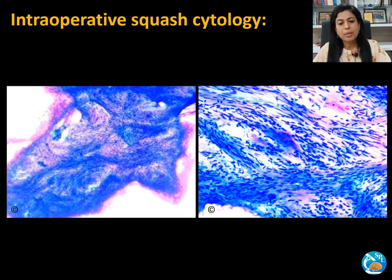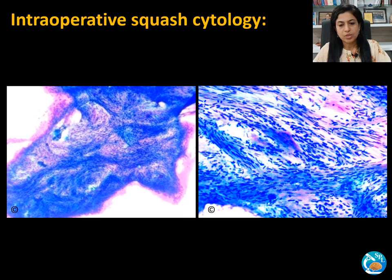We should remember that schwannomas are difficult to crush. So when it is a CP angle tumor, one must also keep in mind the possibility of a fibrous meningioma, but most of the time it is schwannoma.